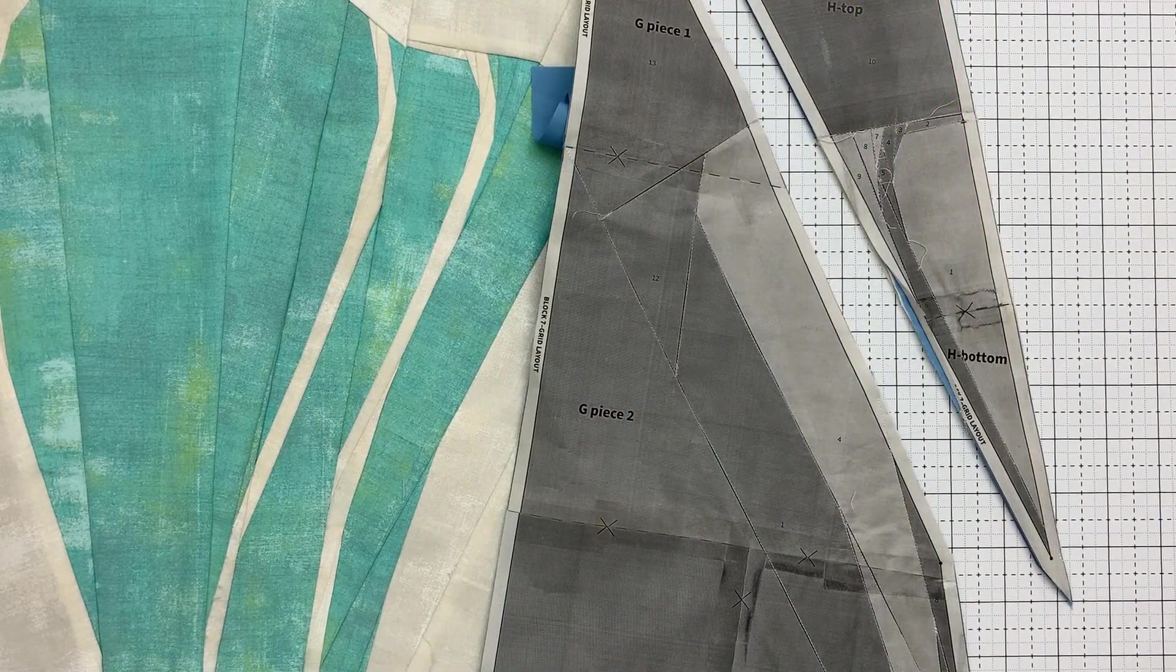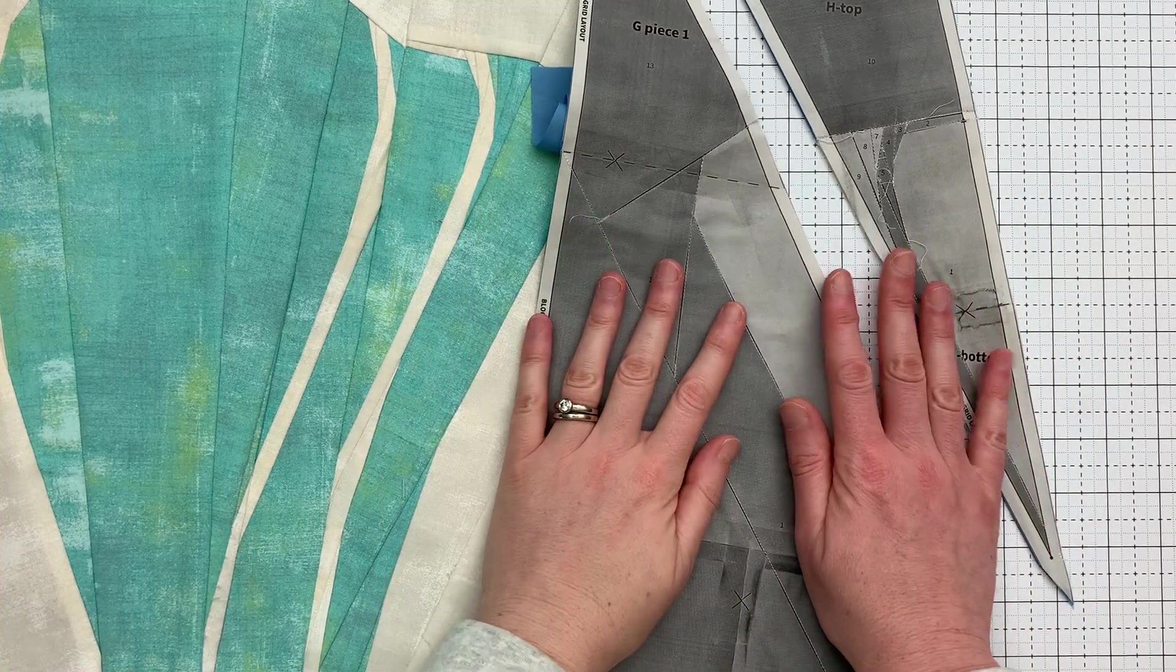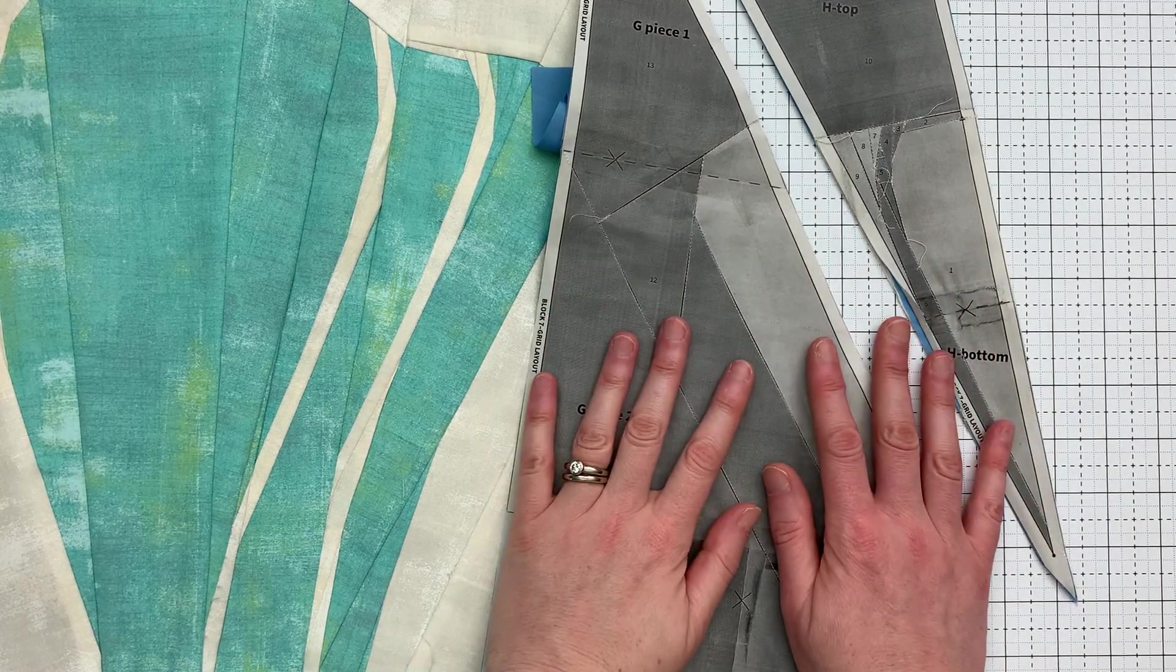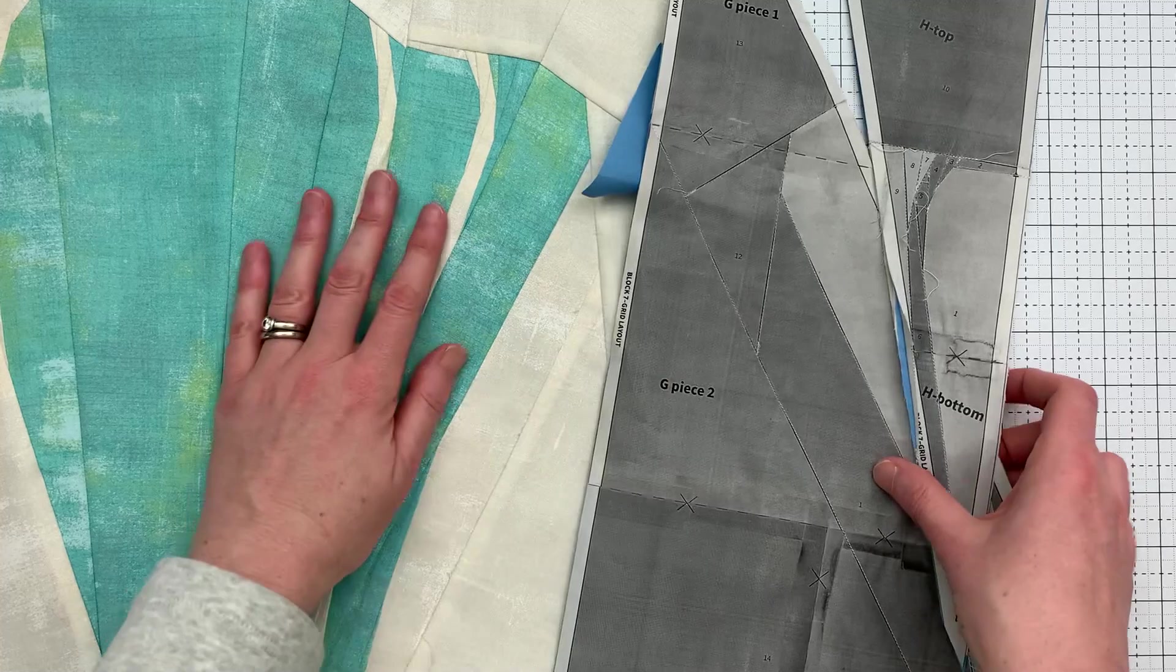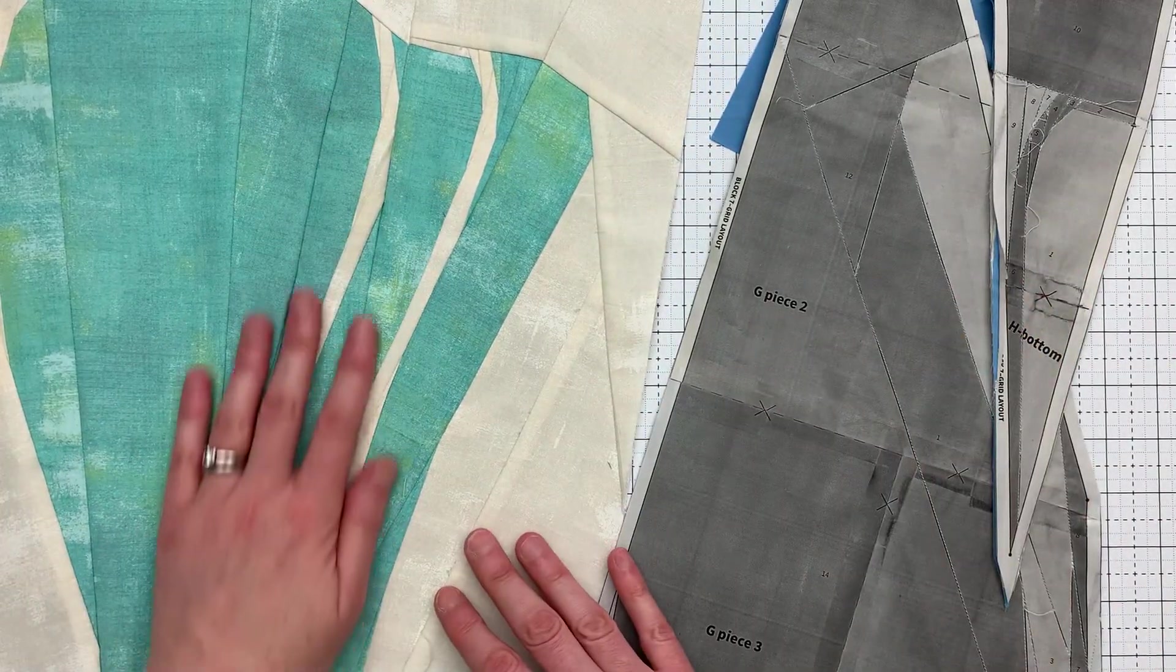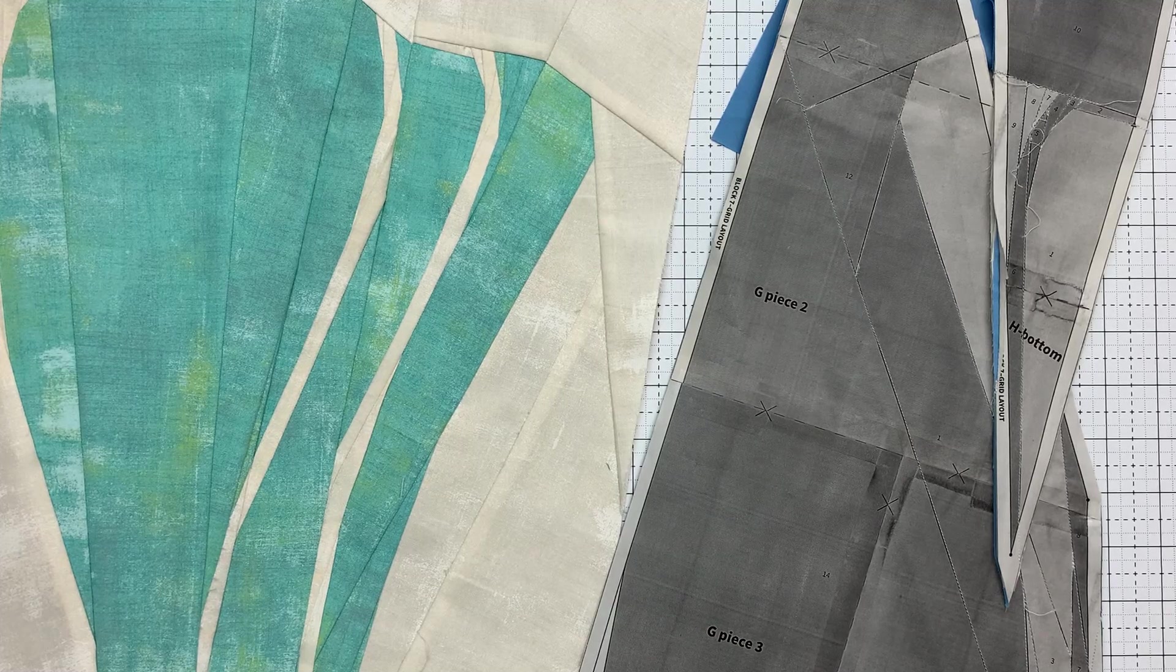One last tip for this month: when joining the paper pieces after they're sewn, be sure to use an iron and clapper if you have one before sewing on the next paper piece, so that you can get a really nice flat seam. If you want to see how I use the iron and clapper and some extra tips, be sure to check out the bonus video for block 5.